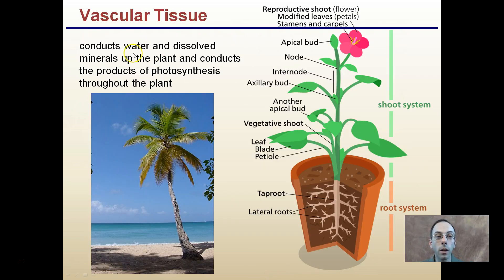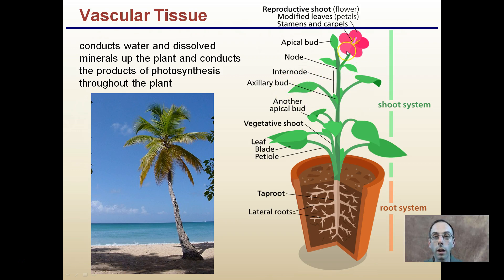Lastly, vascular tissue is responsible for conducting water and dissolved minerals up the plant and the products of the photosynthetic process throughout the plant. Xylem and phloem are two examples. Xylem takes water absorbed in the roots and sends it to the shoots, while phloem can move from the shoots to the roots or roots to the shoots — wherever it's needed — transporting sugars. Leaves are our main sources, and a flower producing petals or fruit may need sugar from leaves, while actively growing roots may also receive sugars.